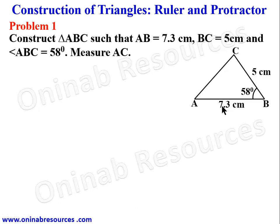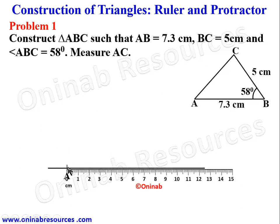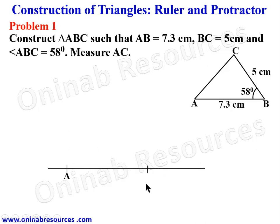We'll do the construction based on the sketch. We draw a horizontal line and locate point A. We place our ruler with the zero point at A and measure 7.3 centimeters. We mark that point, remove the ruler — this is point B, and AB is 7.3 centimeters.